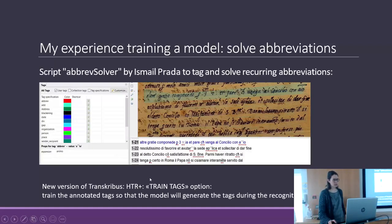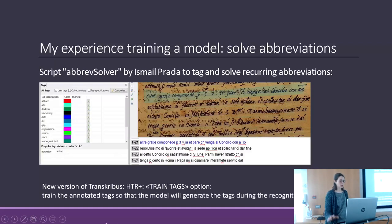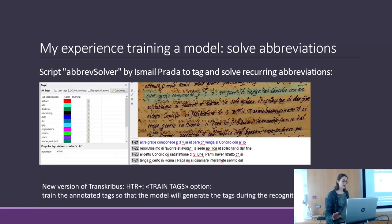In the new version of Transcribus, there is a new option: Train Text and Include Properties. You can tell the machine to learn to automatically add tags and their properties. I haven't tried it yet, but I will try it soon.